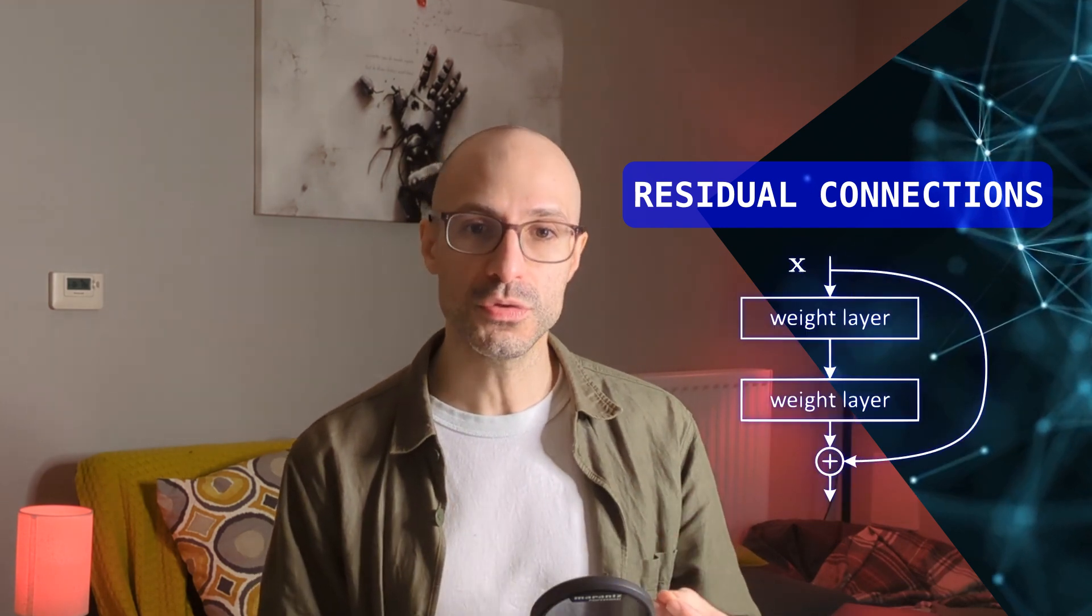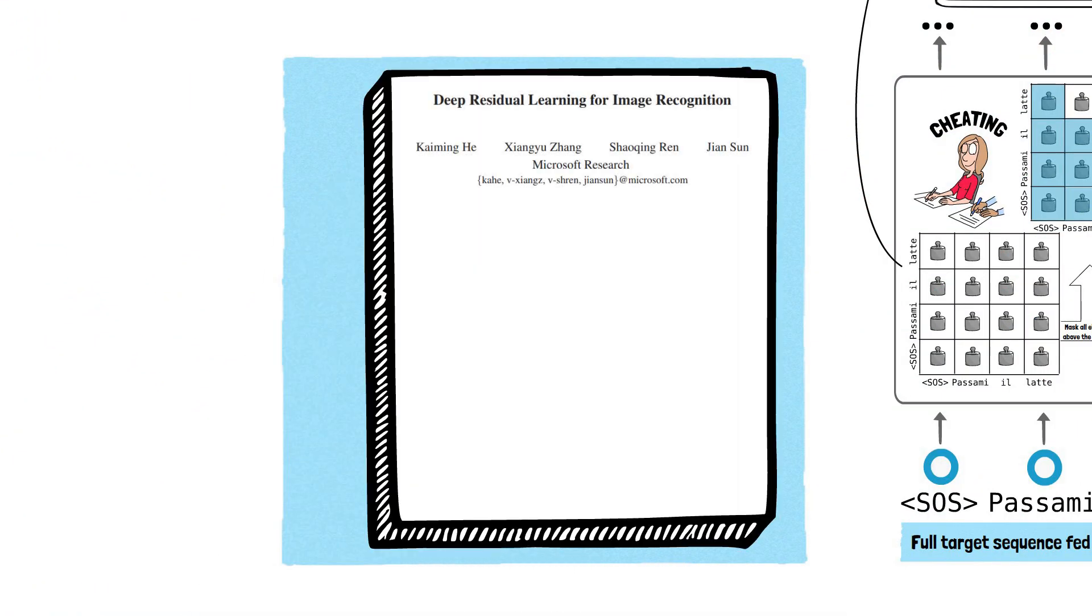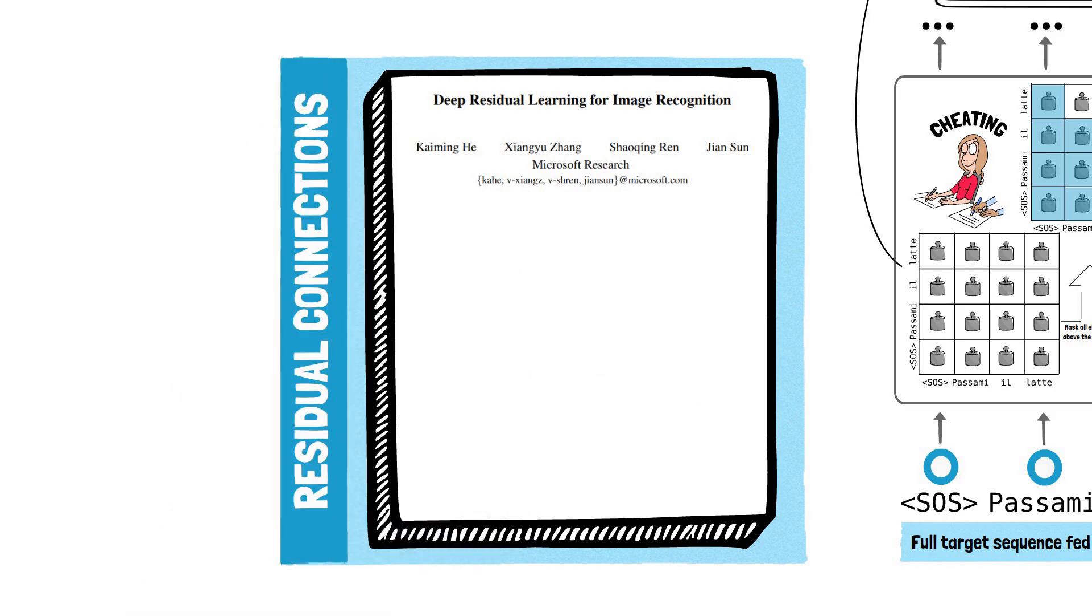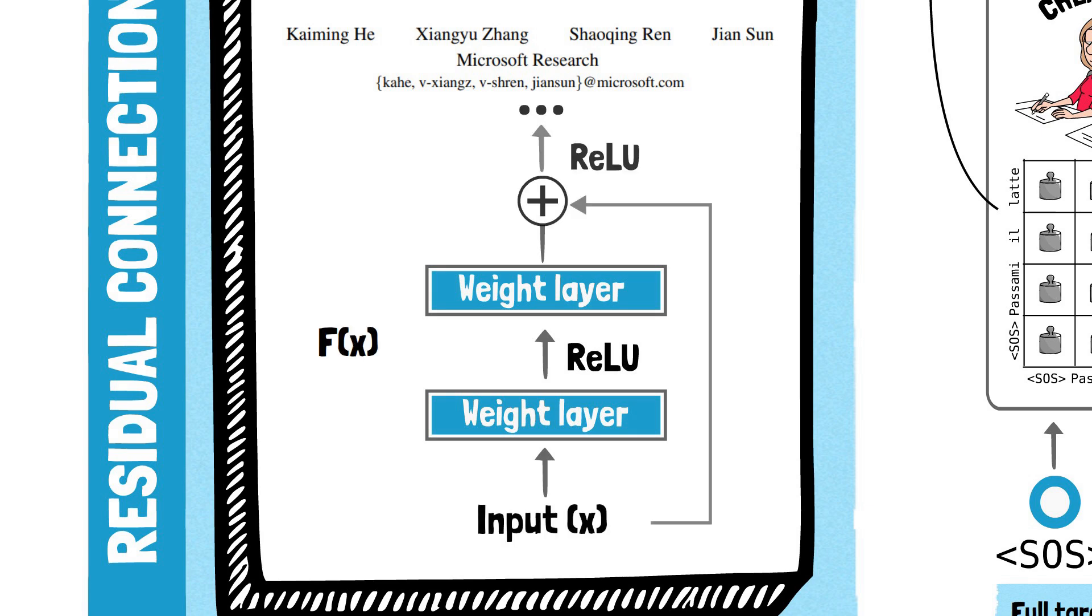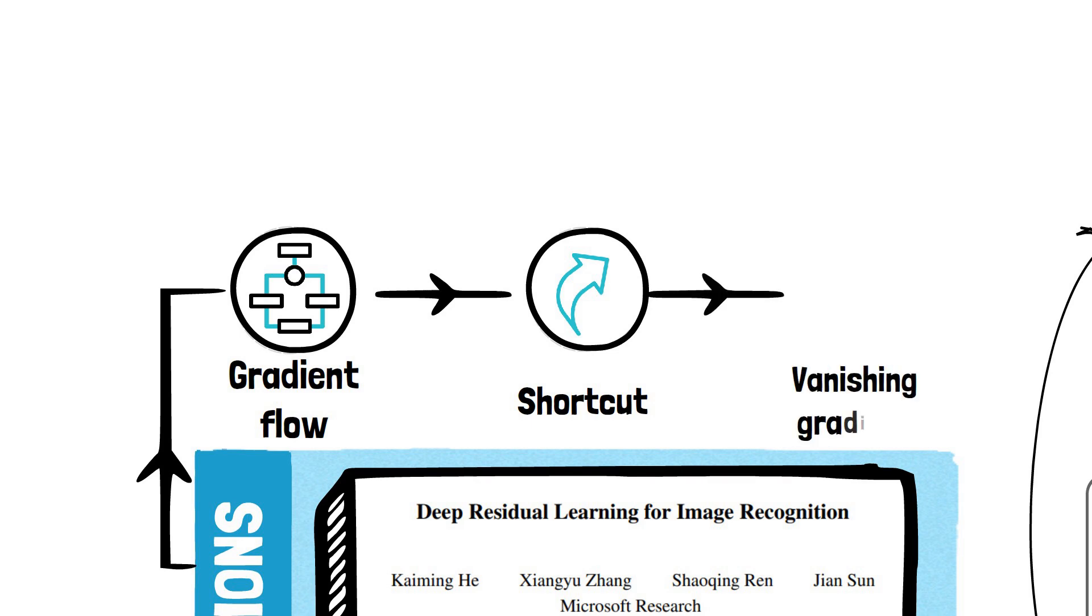As we stack up multiple attention blocks, the network becomes deeper. As we saw in a previous episode, deep networks are hard to train as gradients do not propagate well. They suffer from issues such as vanishing or exploding gradients. To tackle these issues, transformers use a solution called residual or skip connections. Introduced in the 2015 paper Deep Residual Learning for Image Recognition, residual connections work by allowing the input of a layer to skip some layers and be added directly to the output of later layers. This approach facilitates gradient flow during backpropagation, as it provides a shortcut for the gradient to travel through the network. By doing so, it alleviates the vanishing gradient problem and enables deeper networks to learn effectively.